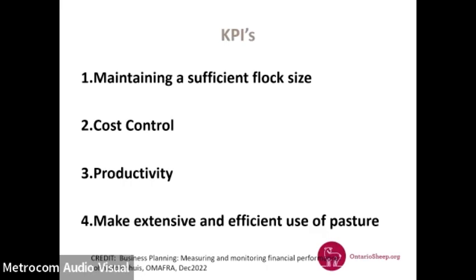From that study, these were the top four KPIs regardless of flock size or years in the industry. First was flock size — really, how many animals are you marketing or have marketable in a window of time to cover your input costs. Cost control was number two. Productivity within the flock was number three — how many lambs were marketed out of the production unit. And fourthly, making extensive and efficient use of pasture. Most of you who know me know I'm a diehard on promoting pasture and pasture management.